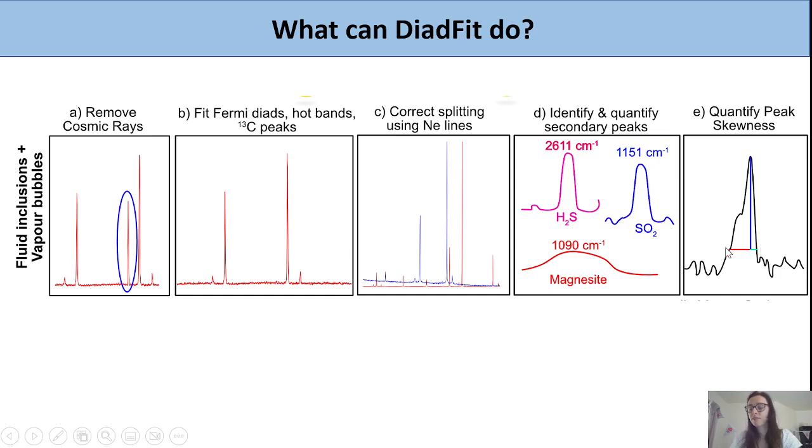This can be really important if you've collected data below the critical temperature of CO2, below about 33 degrees. If you have a high-density inclusion that's liquid and vapor at room temperature, you'll get a mixed spectra. It's really important to identify this because if you're just fitting a single peak and your inclusions are of that density, you can end up with the wrong splitting.